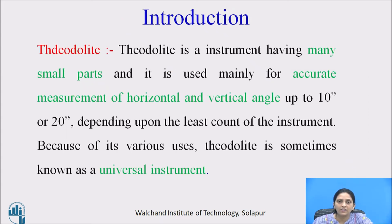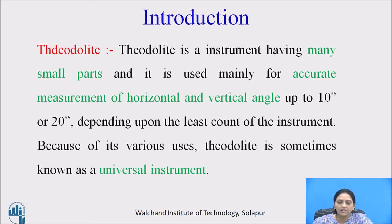Theodolite is an instrument having many small parts. It is mainly used for the accurate measurement of horizontal and vertical angles. The accuracy of theodolite is up to 10 seconds or 20 seconds, depending upon the least count of the instrument. Theodolite is used for various purposes, and by considering its uses, it is sometimes known as a universal instrument.